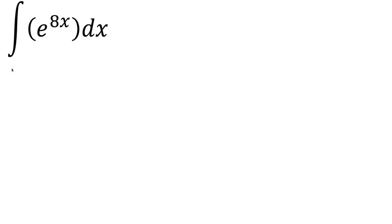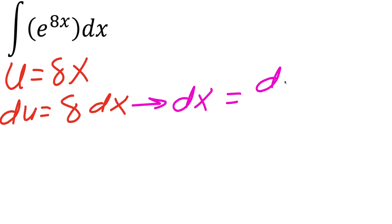The way we're going to solve this problem is to say that u equals 8x. Then our du term, the derivative of 8x, would be 8dx. We can isolate the dx term, so dx equals du divided by 8. Now we just need to swap.